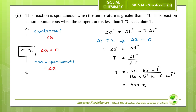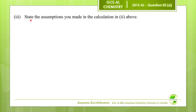The question asks for T in degrees Celsius. Therefore, T equals 900 minus 273, which gives 627°C. This is the answer for question number two.